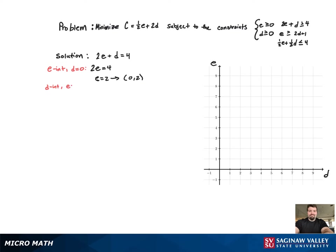And now we'll find the d intercept, set e equal to 0. That corresponds to the point 4, 0. So with the two points, we can go ahead and graph the line.